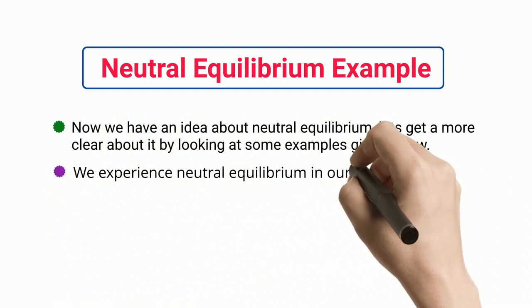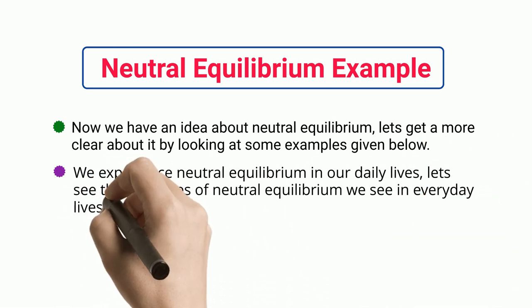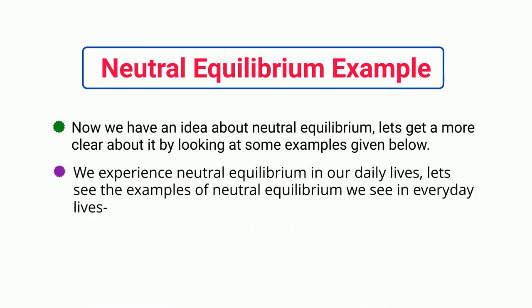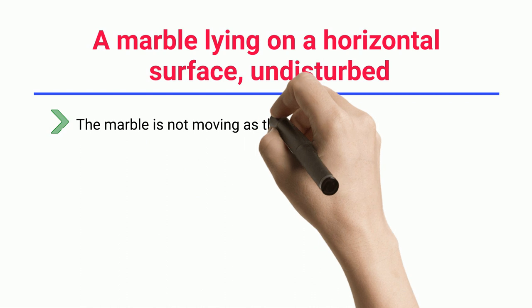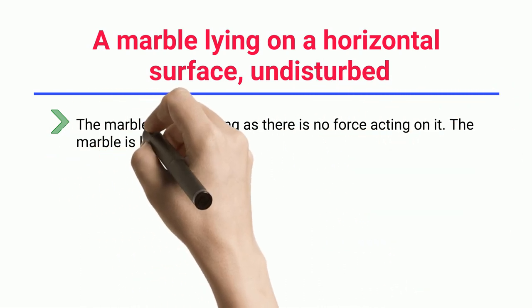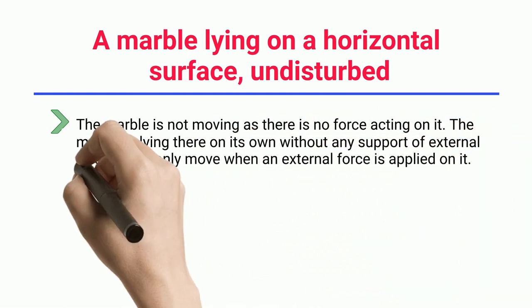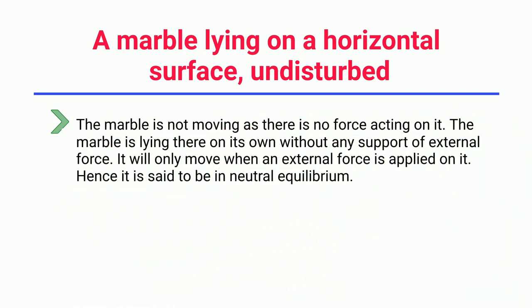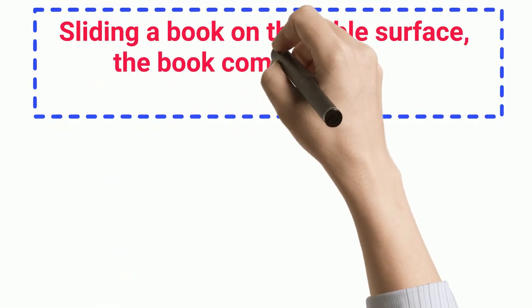We experience neutral equilibrium in our daily lives. Example one: a marble lying on a horizontal surface undisturbed. The marble is not moving as there is no force acting on it. It is lying there without any support of an external force and will only move when an external force is applied on it.